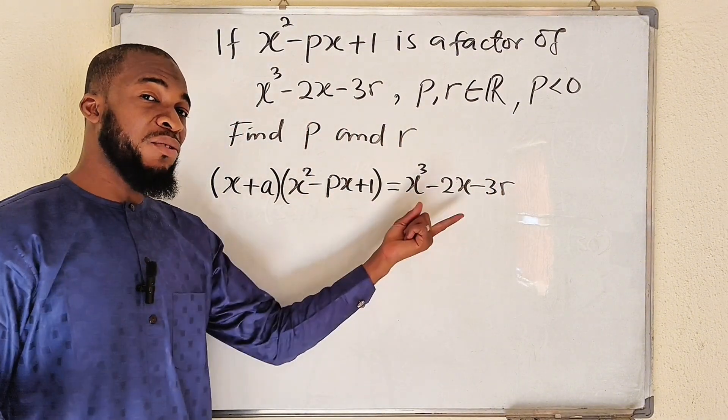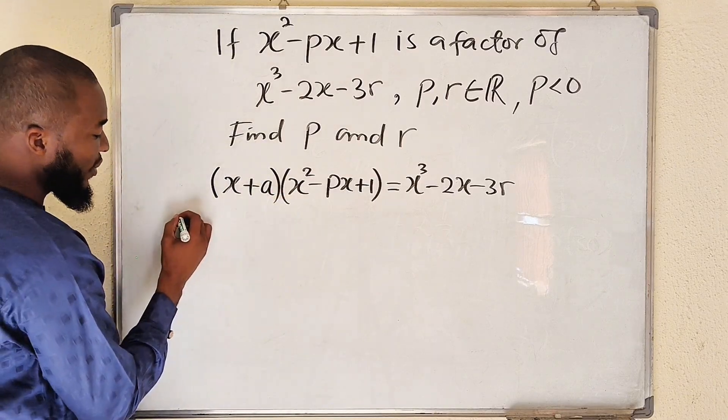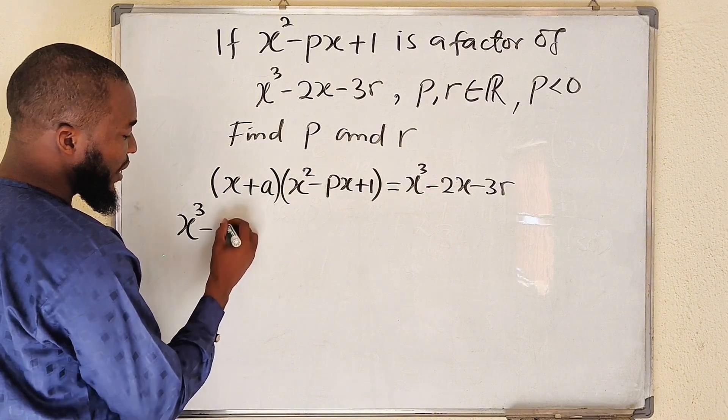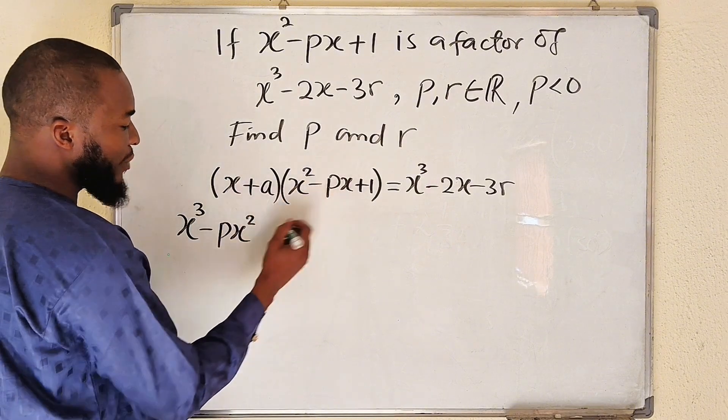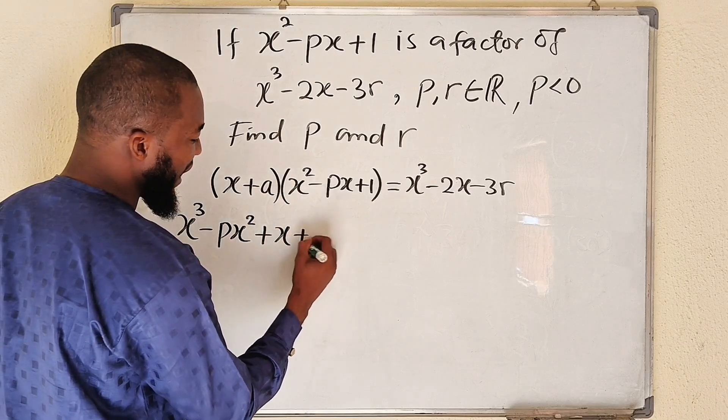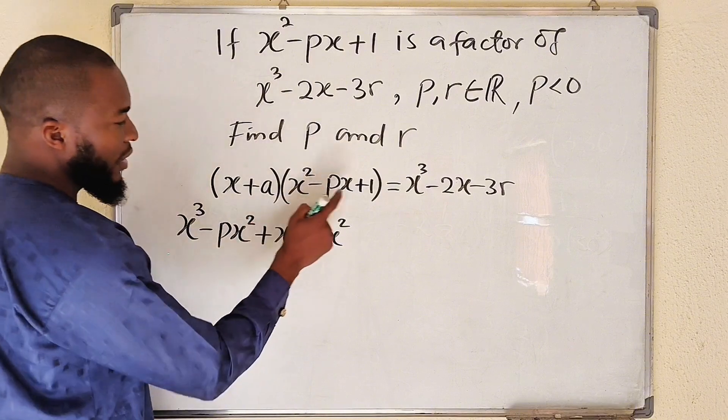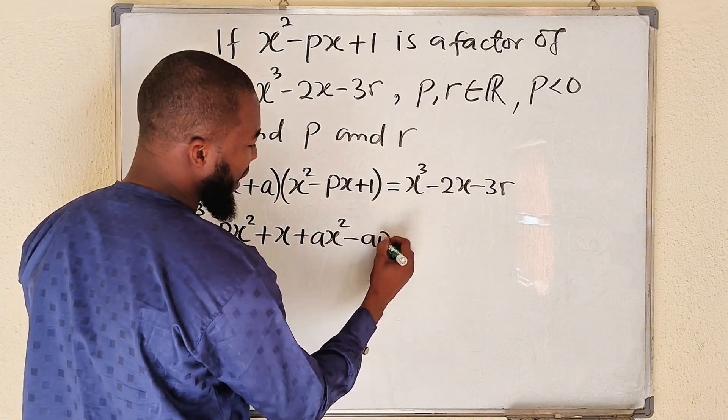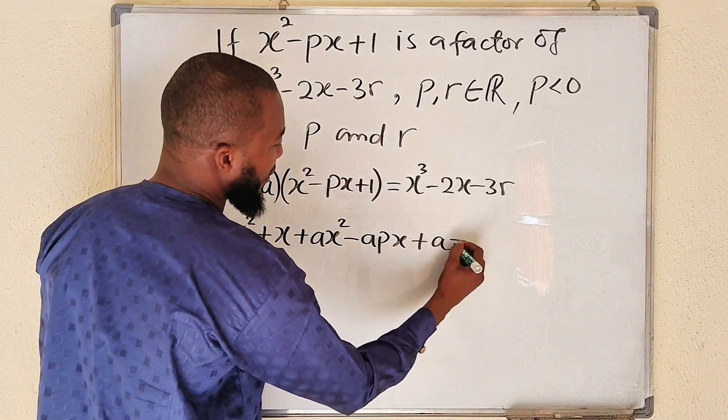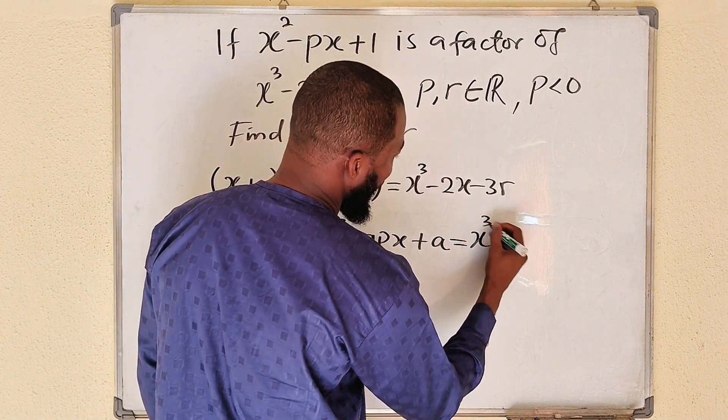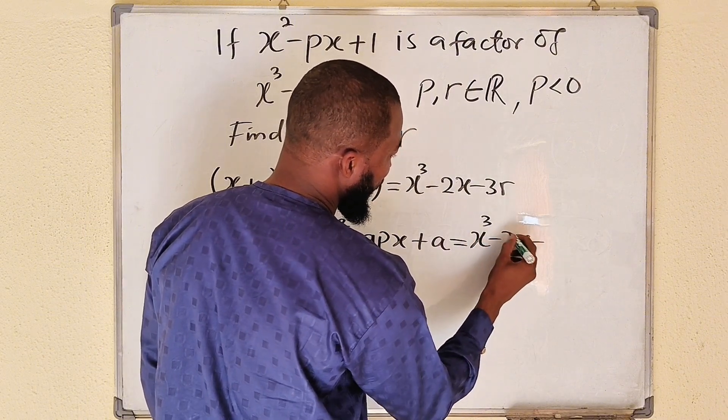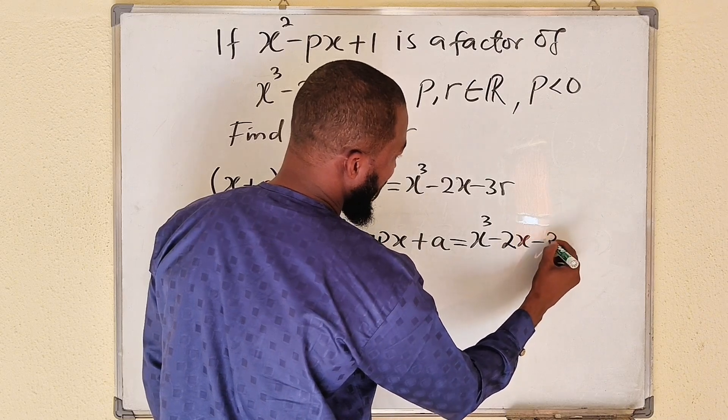x times x squared will give us x cubed. x times this will give us negative px squared. x times 1 will give us x. a times x squared will give us ax squared. a times this will give us negative apx. a times 1 is a. And this is equal to x cubed minus 2x minus 3r.